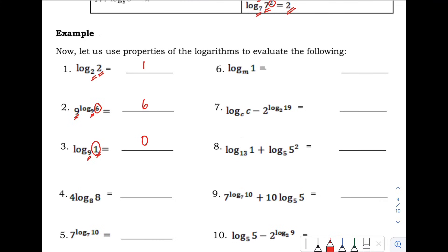Number 4: we have 4 times the logarithm of 8 with base 8. Since the number and the base are the same, the logarithm equals positive 1. There is a 4 outside, so that is 4 times 1, and the answer is positive 4.